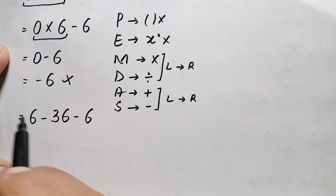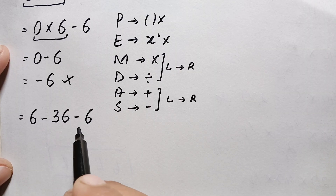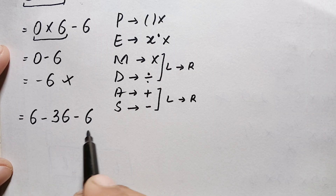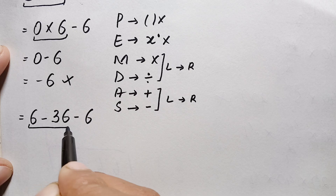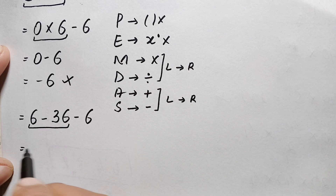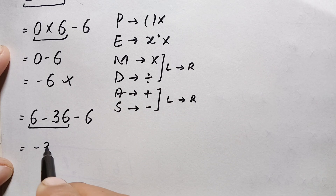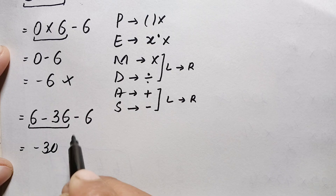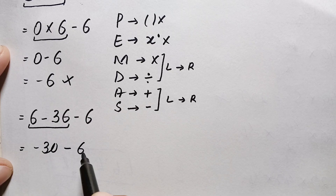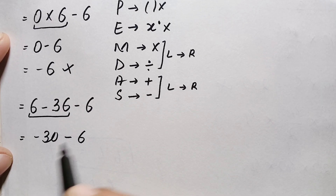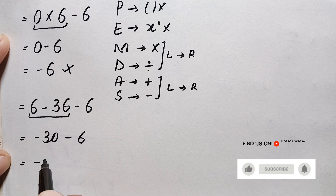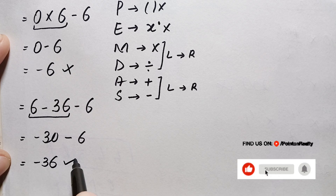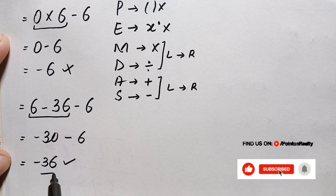Now we have two subtraction operations, so we follow subtraction from left to right. First, 6 minus 36 is simply minus 30, giving us minus 30 minus 6. Finally, minus 30 minus 6 is simply negative 36, and that is our correct answer: negative 36.